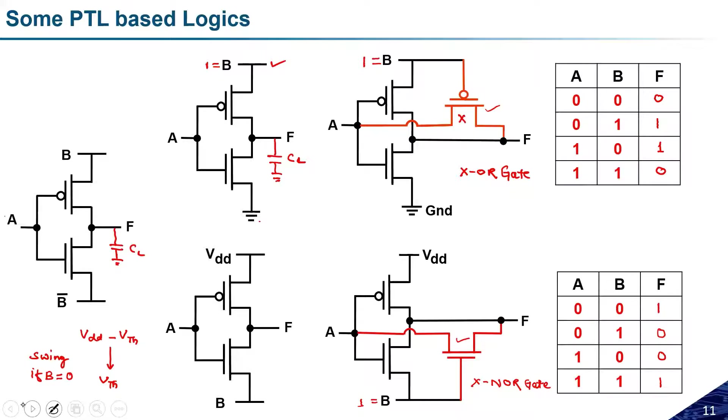The problem with these circuits is the threshold voltage drop. When passing logic 0 through PMOS, it cannot completely pass the logic — there will be some V_TH drop. Similarly, the NMOS transistor cannot pass a strong logic 1. So in some combinations there will be threshold voltage drops. We will look at solutions to overcome this problem, but first let us design more circuits.